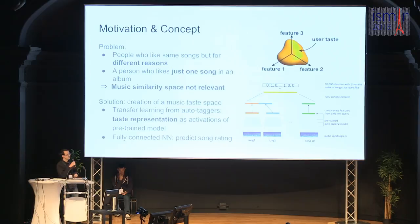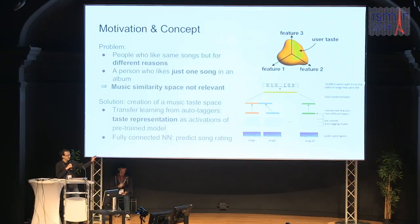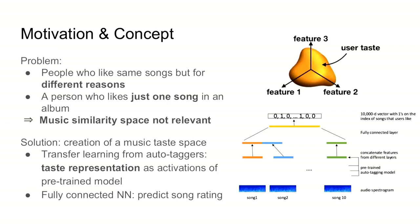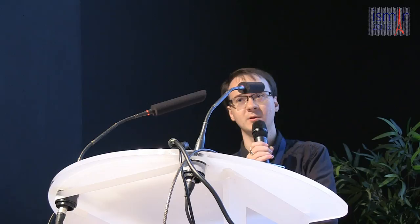Typical music similarity doesn't differentiate those preferences well. Another example: some users like one song from an album but not the rest. Our solution was to use transfer learning from classifiers and auto-taggers that had been pre-trained. We use models trained for their respective objectives and use the activations of either the topmost hidden layer or all hidden layers as input for another fully connected neural net that predicts the user's rating of the song — zero if they don't like it, one if they like it.